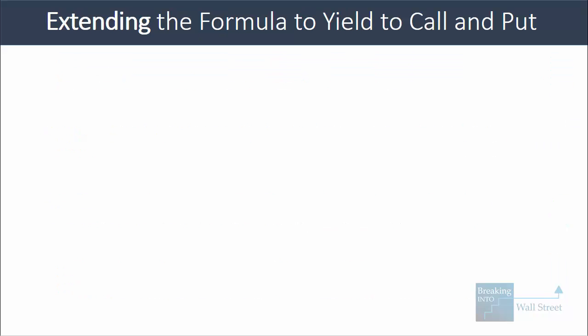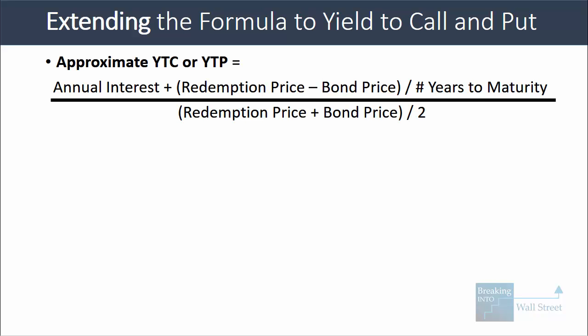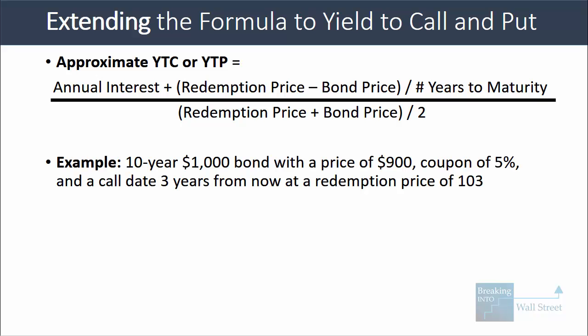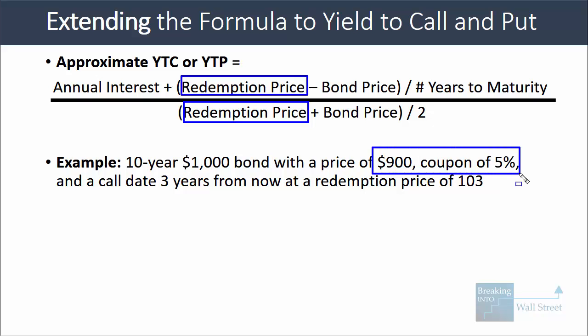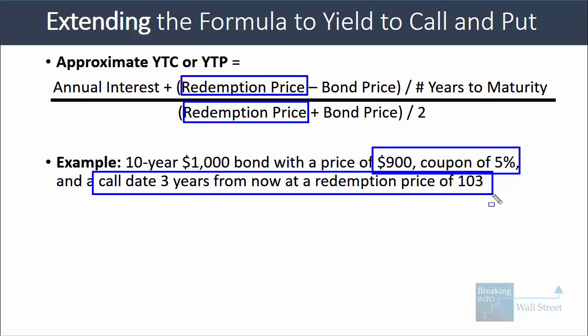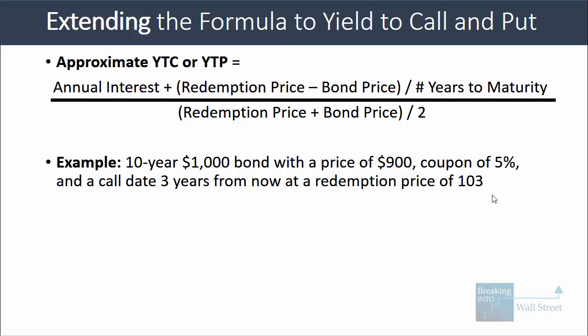Here's how you extend the formula to cover yield to call and yield to put — the yield when a company repays early or investors force an early redemption. It's almost the same formula: you take annual interest, then the redemption price minus the bond price divided by the years to call or put, and then divide by the average between the redemption price and the bond price. For example, with a 10-year $1,000 bond priced at 90, a coupon of 5%, and a call date three years from now at a redemption price of 103...